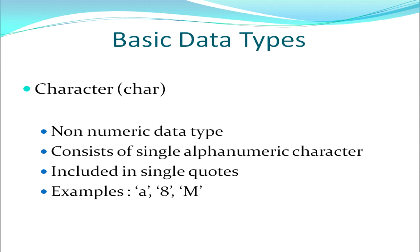We move on to the next data type, which is the character data type — short form char. Integer and float are both numeric data types, meaning I can do all sorts of arithmetic calculations — addition, subtraction, multiplication, division — on those data types. But when talking about characters, I cannot do any arithmetic calculations on a character data type. These are non-numeric data types. The characters are enclosed in single quotes. For example, small 'a' or '8'. Now 8 is a number, but when enclosed in single quotes it becomes a character — it is no longer an integer. So 8 without quotes is an int data type, while 8 with single quotes is a character data type.